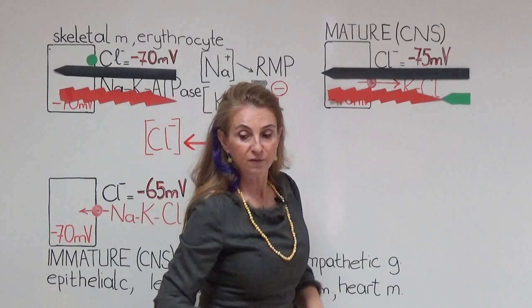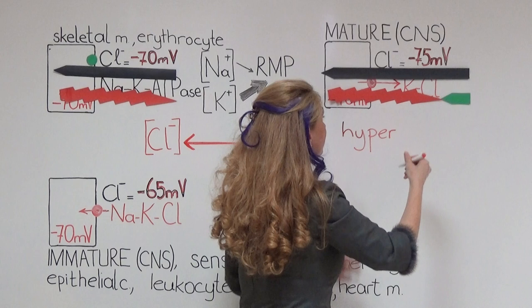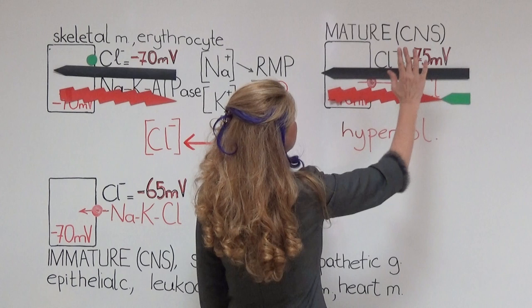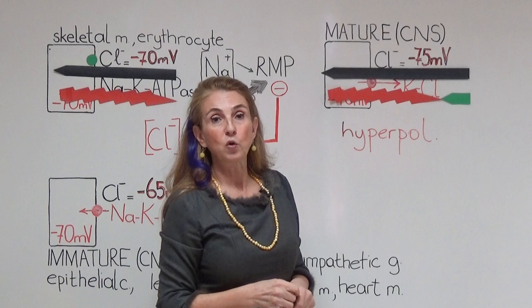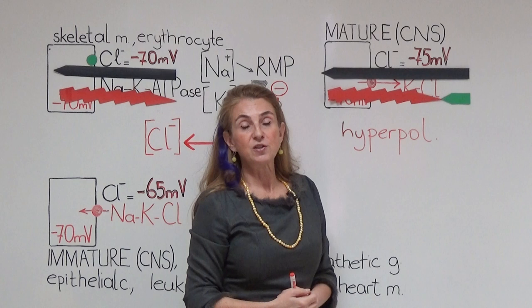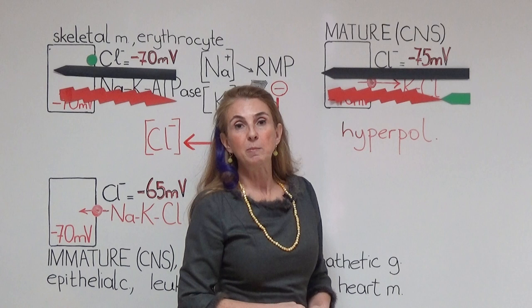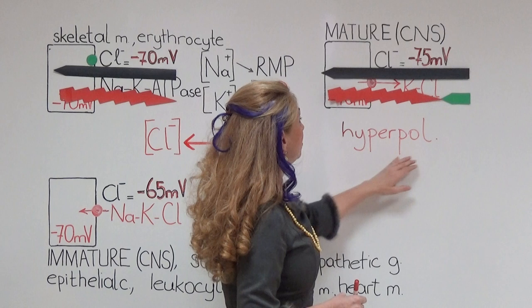Because chloride ions carry a negative charge, they bring more negativity to the interior of the cell, and the membrane potential becomes more negative — this is called hyperpolarization. So in mature cells of the central nervous system, when ligand-gated chloride channels open, the cell is hyperpolarized. This hyperpolarization is a type of local potential, and the ligand-gated chloride channels here are dependent on GABA or glycine. When GABA or glycine open chloride channels, this produces hyperpolarization in the mature cells of the central nervous system.